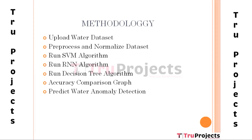The Decision Tree model is applied on the test dataset to calculate decision tree accuracy, precision, and recall. The sixth module is Accuracy Comparison Graph, which provides a graphical comparison between all three algorithms. The seventh module is Predict Water Anomaly Detection, where we upload the test dataset and the machine learning algorithms predict whether an anomaly is present or not.